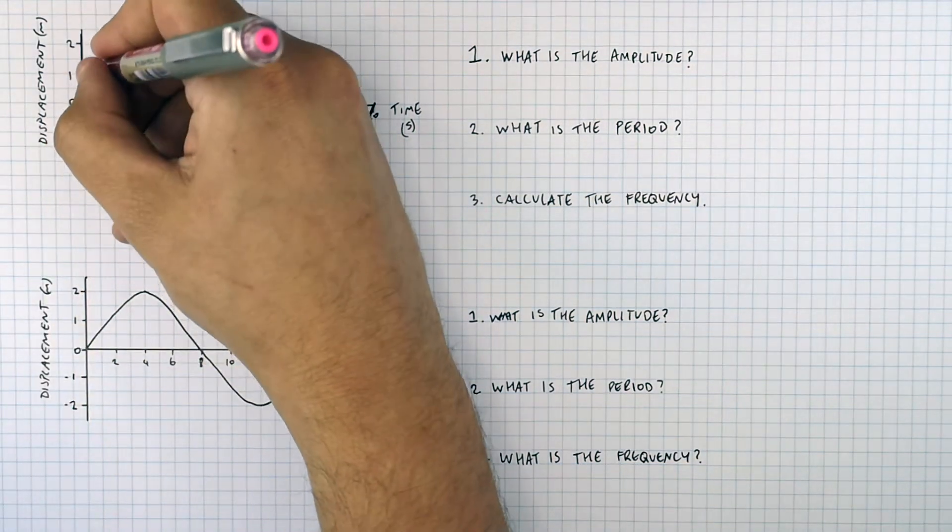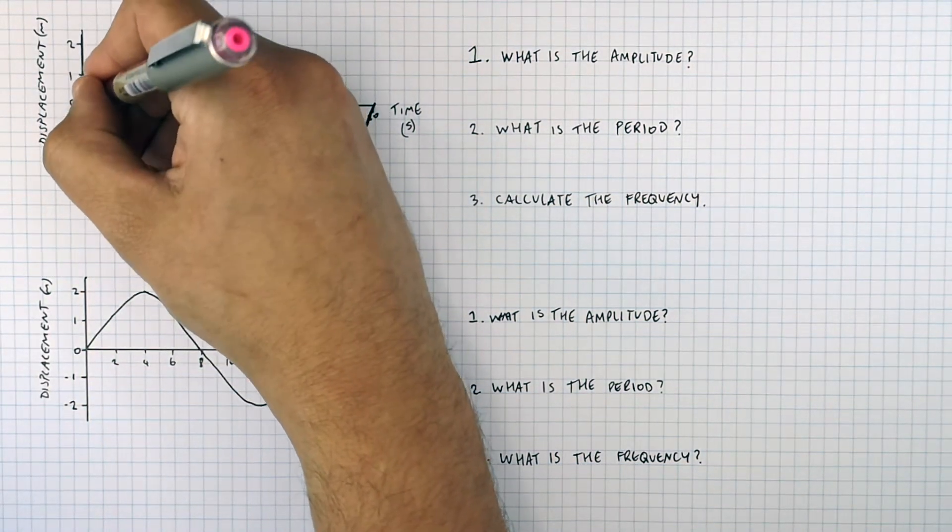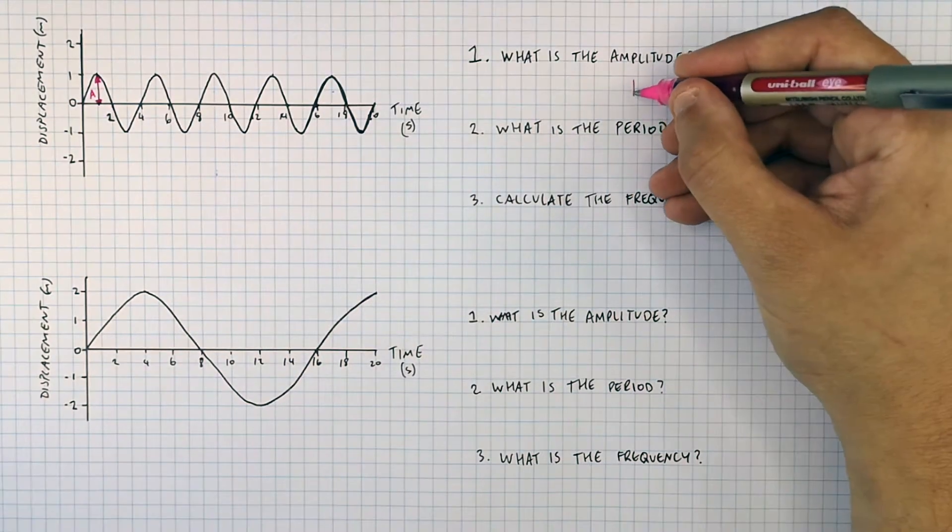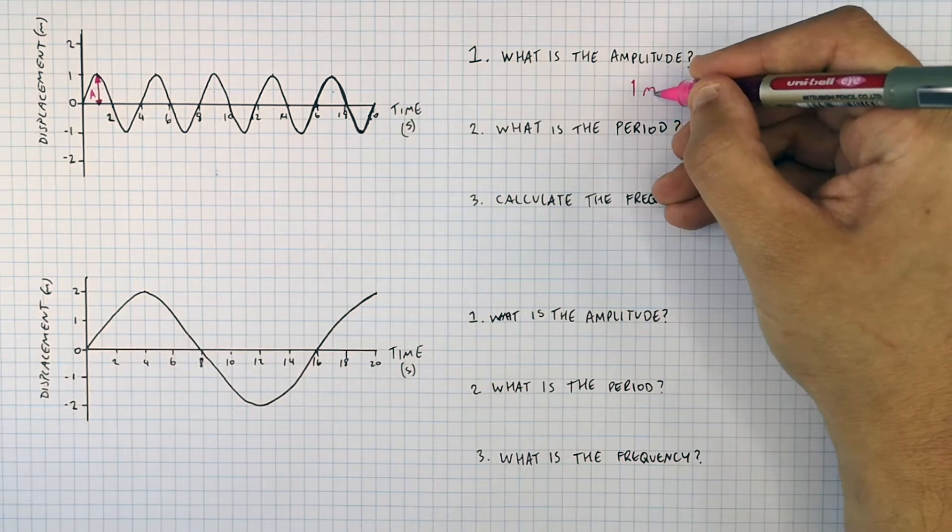Question one, what is the amplitude? The amplitude is the maximum displacement away from the undisturbed position. So as you can see here, the displacement for wave one is going to be one meter.